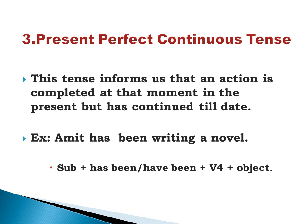Present perfect continuous tense informs us that an action is completed at that moment in the present but has continued till date. Example: Amit has been writing a novel — he has begun it and has continued to carry out that action. Formula: subject + has been/have been + ing form of the verb + object. As we have continuity in this, we need to use the ing form of the verb.